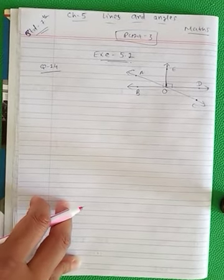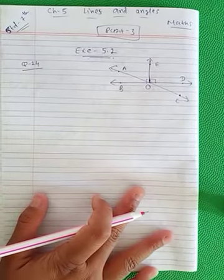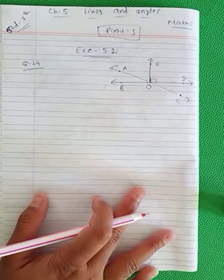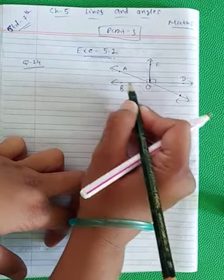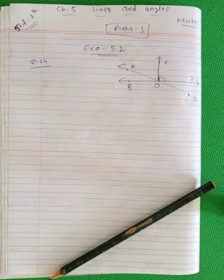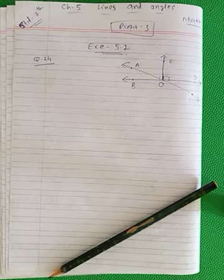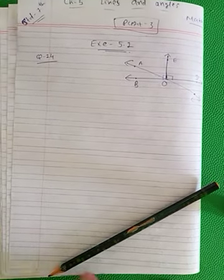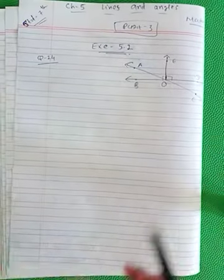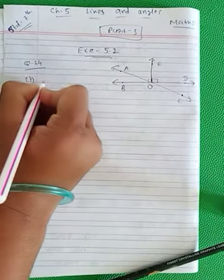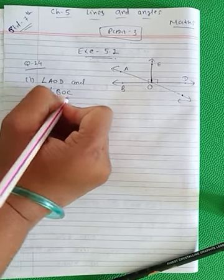Now, first number: obtuse vertically opposite angles. Obtuse means 90 se bade bhi hone chahiye, aur vertically opposite angle bhi hone chahiye. So the answer is: angle AOD and angle BOC.